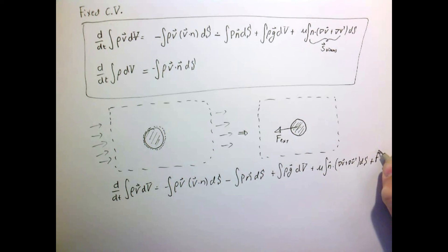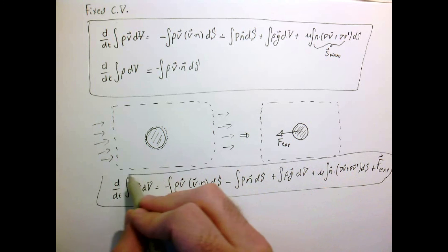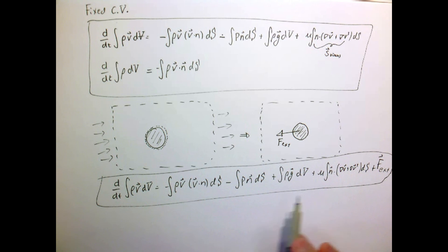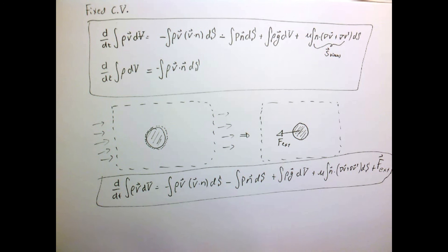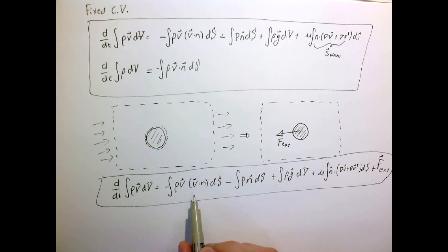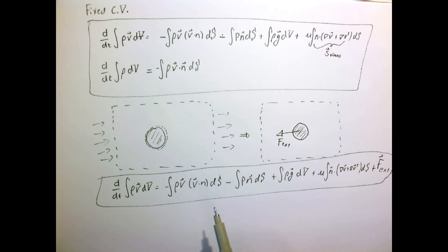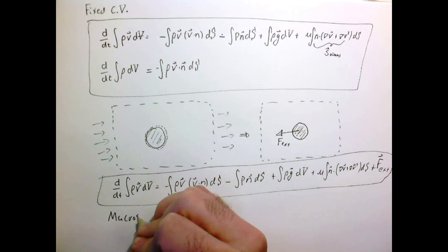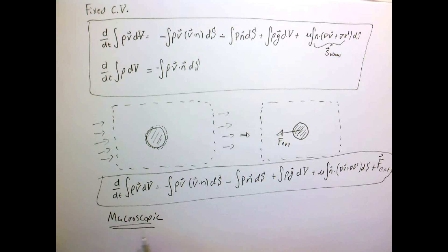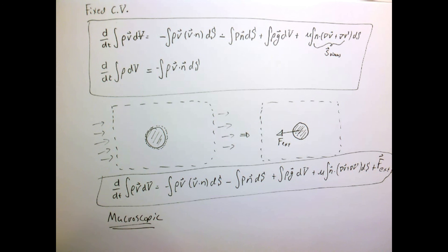So there we have it: conservation of momentum in control volume form. This seems rather long, but in examples many terms can be ignored or are simply zero, leading to simple insights. The key is that with the control volume approach, we're not solving for the details of the velocity field — we're just looking at what's happening on the boundary and ensuring everything balances. This macroscopic balance can't give us a detailed velocity field, but with appropriate assumptions it leads to great simplifications that are much easier than solving for the full velocity field.